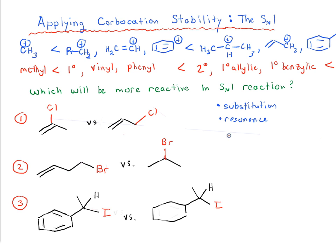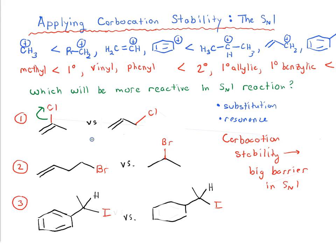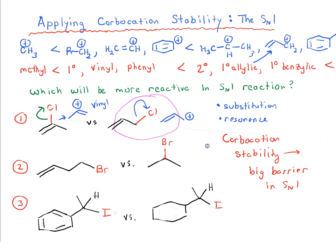The key barrier in the SN1 reaction is carbocation stability — that's the most important factor to think about. In the first step of the SN1, the leaving group leaves and we form a carbocation. In the first example, if the leaving group leaves on the far left, we would form a vinyl carbocation. In the other case, we obtain a primary allylic carbocation. Primary allylic is more stable than vinyl on our list, so that substrate is going to be more reactive in the SN1 reaction.